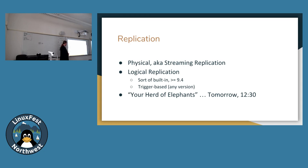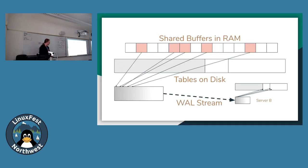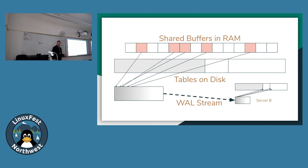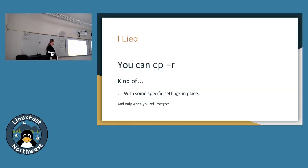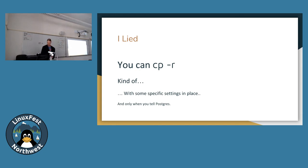Coming back to streaming replication — we're taking all the changes coming out into the transaction log, sending them as a WAL stream over to another server where they're applied. But what are they being applied to? We need some type of starting point, otherwise the changes don't really make sense. We call that starting point the base backup — this is your physical backup of the database system. You can do a copy of the whole database, but you need to do some preparation first, making some settings changes and telling Postgres we're going to do this.